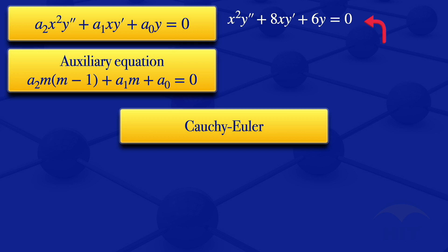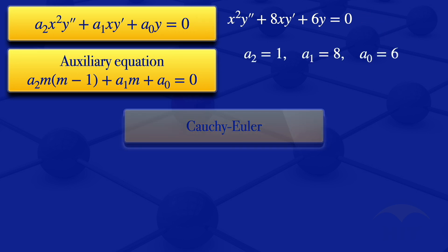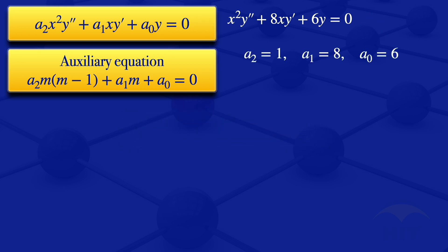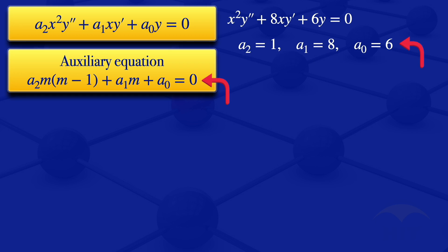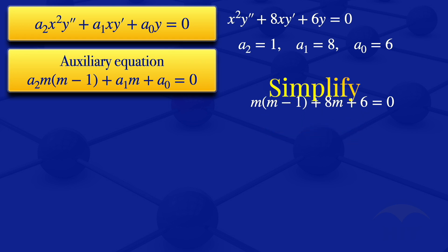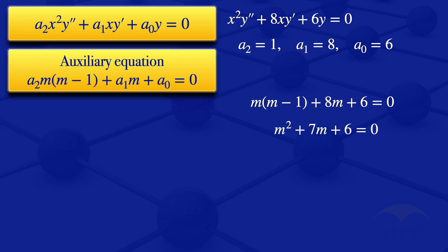The auxiliary equation is given by a2 times m times (m minus 1) plus a1 times m plus a0 equals 0. Comparing our given equation with the standard form, we see that a2 equals 1, a1 equals 8, and a0 equals 6. Substituting these values, the auxiliary equation becomes m(m minus 1) plus 8m plus 6 equals 0, which simplifies to m squared plus 7m plus 6 equals 0.